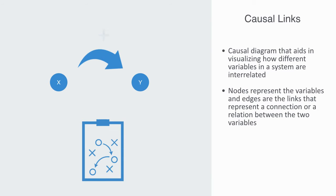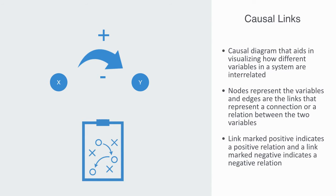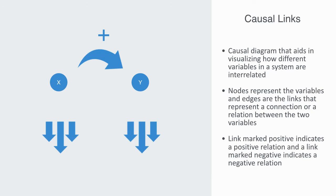A link marked positive indicates a positive relation and a link marked negative indicates a negative relation. A positive causal link means the two nodes change in the same direction.